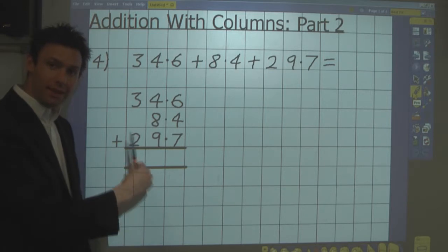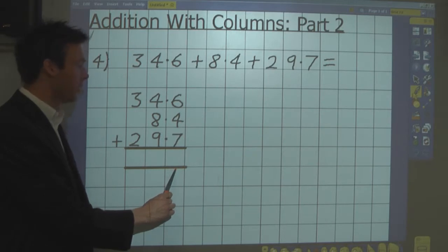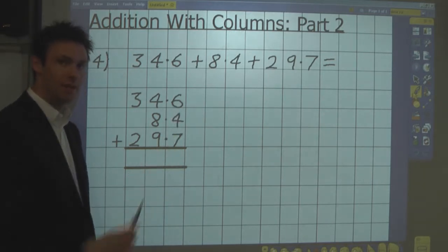Again I start with the least significant digit first. So in this case it's the tenths. And I do 6 tenths plus 4 tenths plus 7 tenths.